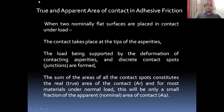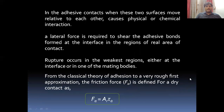Adhesion depends on the true and apparent area of contact, because the real or true area is the fraction of the apparent area available between two contacting surfaces. The load is supported by the deformation of contacting asperities and discrete contact spots. The rupture of these asperities takes place either at the interface or in one of the mating bodies.